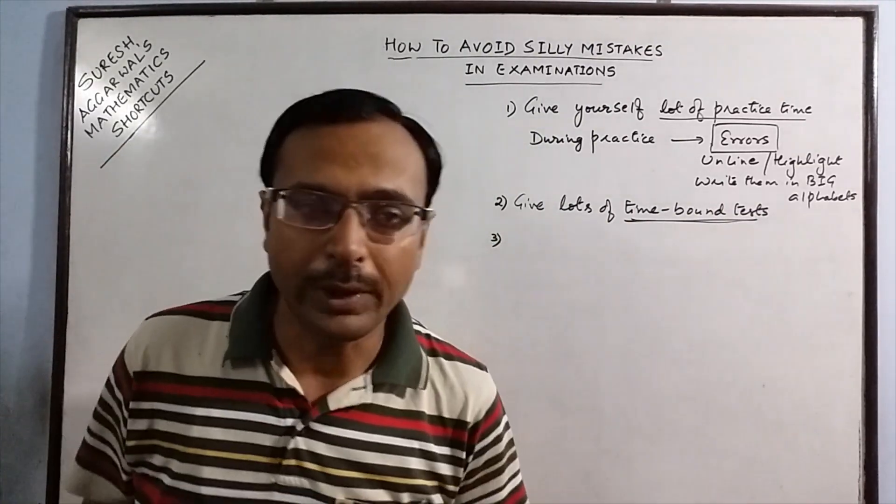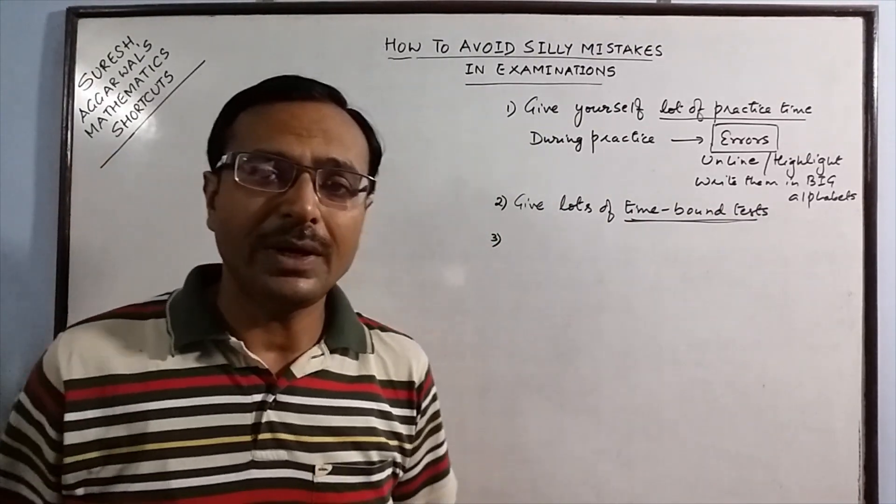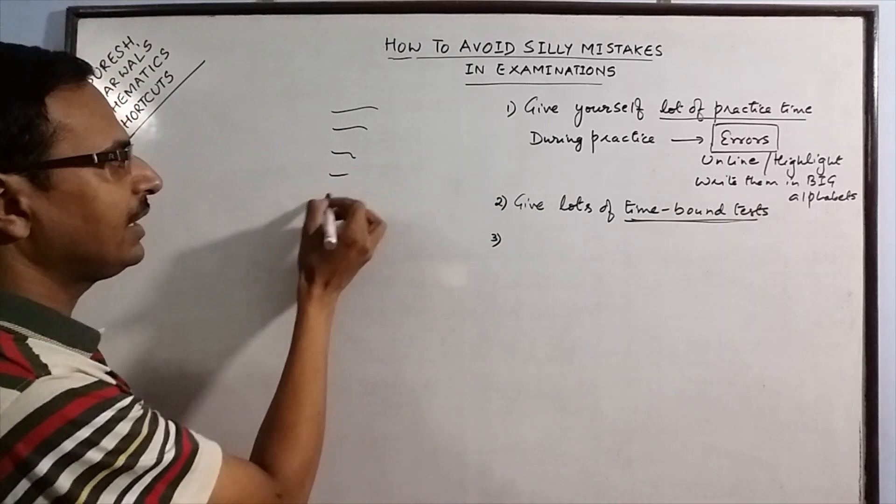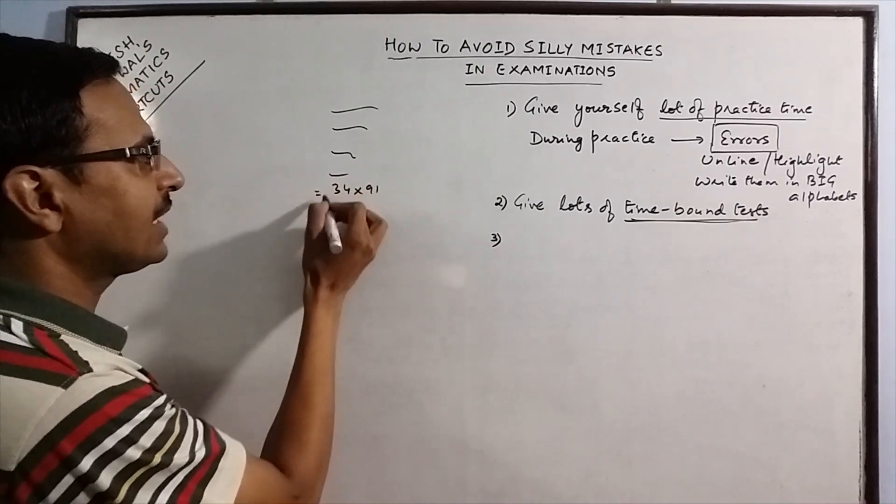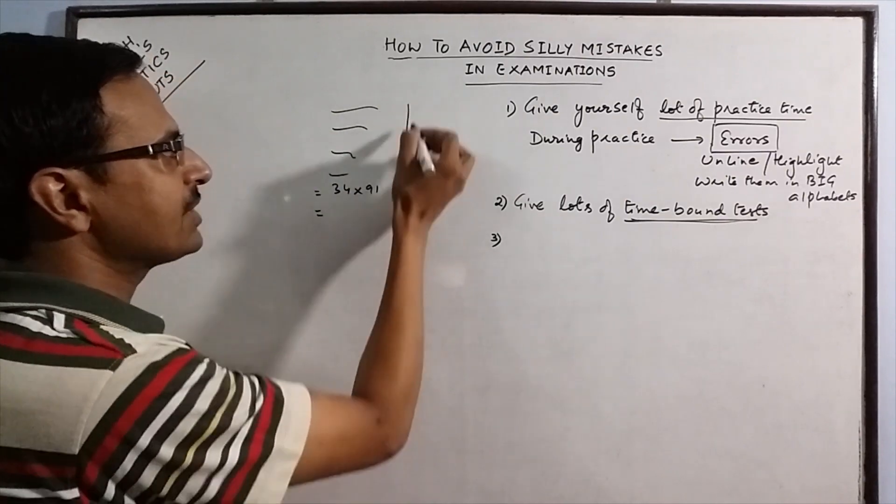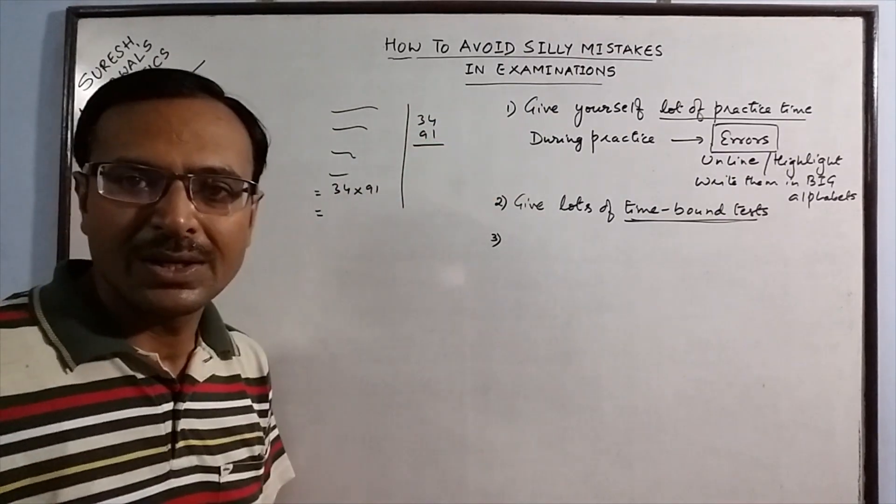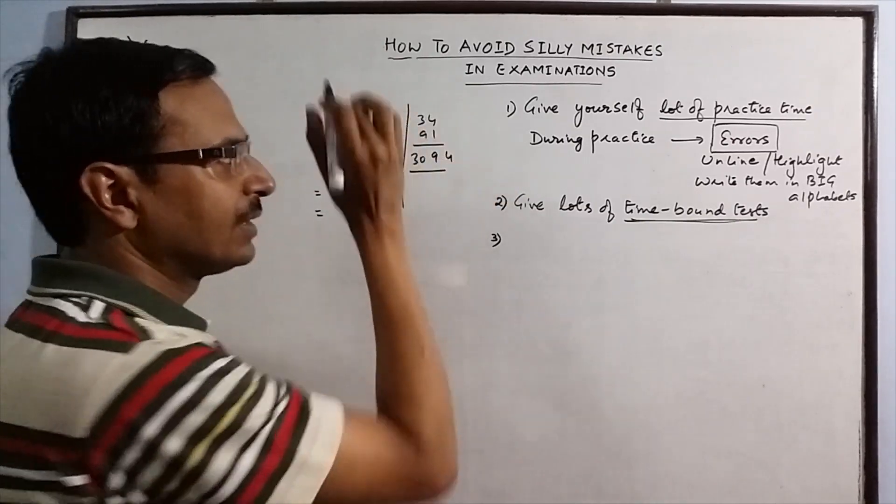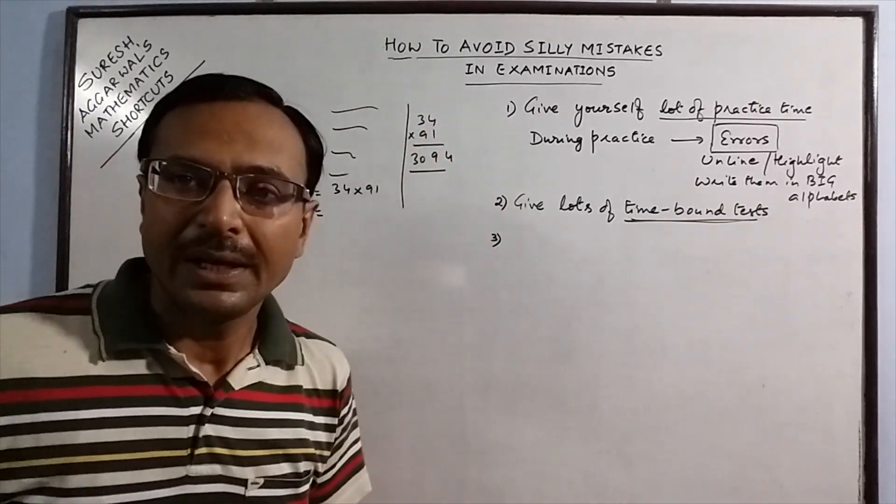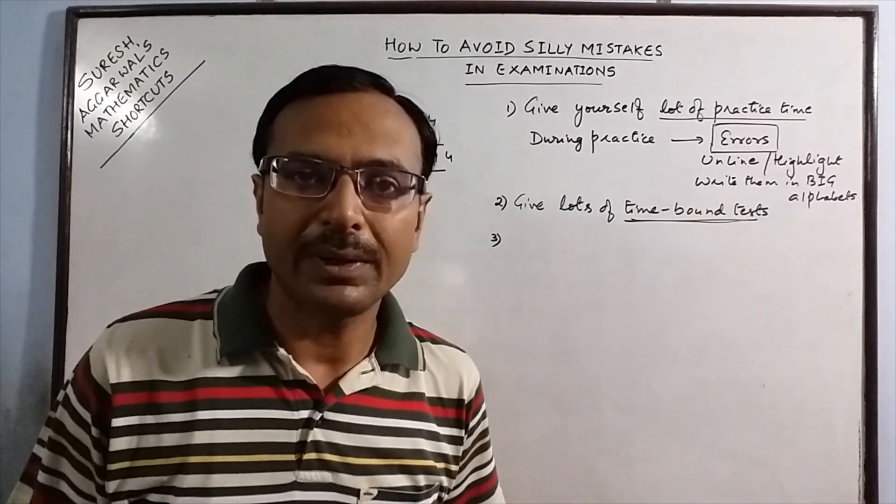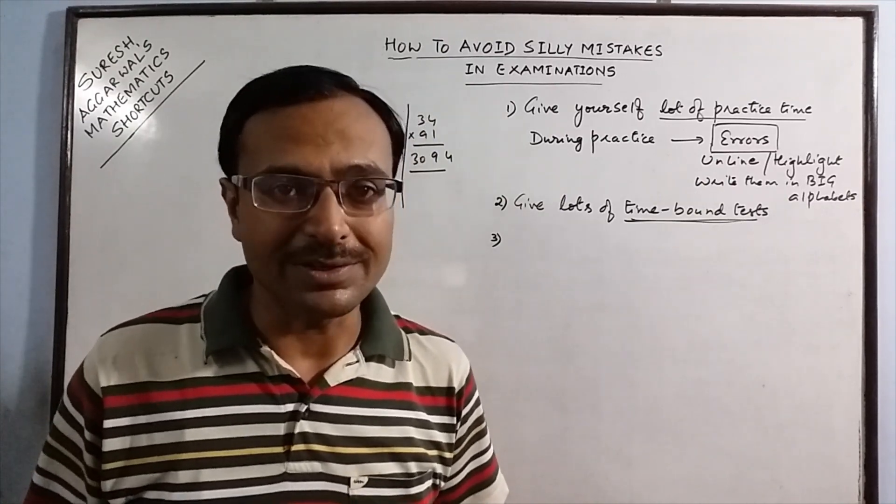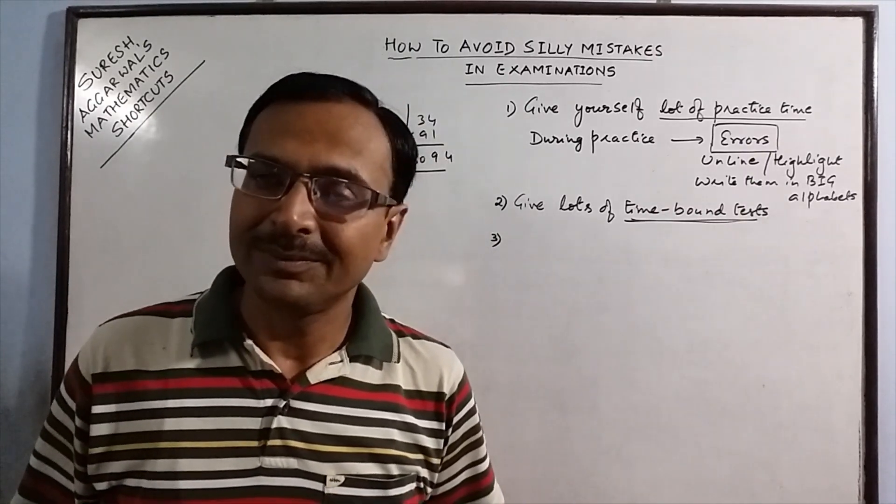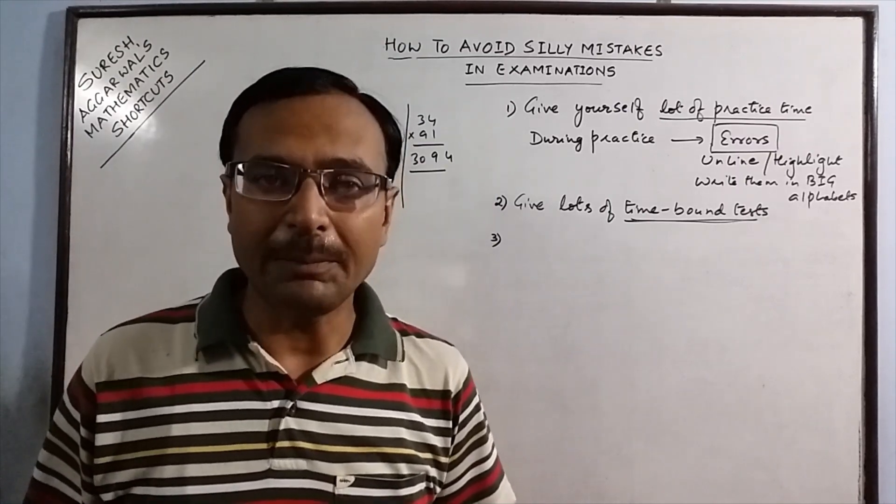The third and very important point is while attempting the question paper. Now suppose you are writing the steps like this and finally you get 34 into 91 as the answer. So what you do is in the margin you calculate this 34 into 91. So whenever you calculate this in rough, this is the product. You cannot afford to check the whole paper at the end of the paper in the last 10 minutes. It is impractical. Anyone who suggests you to check your paper at the end is not telling you the right way of attempting the paper.